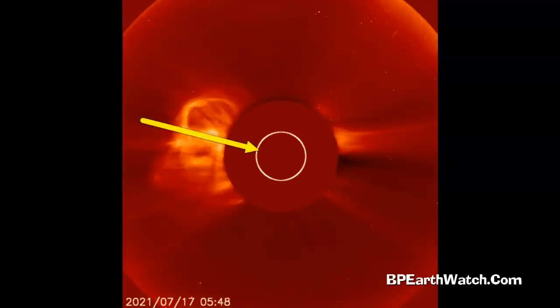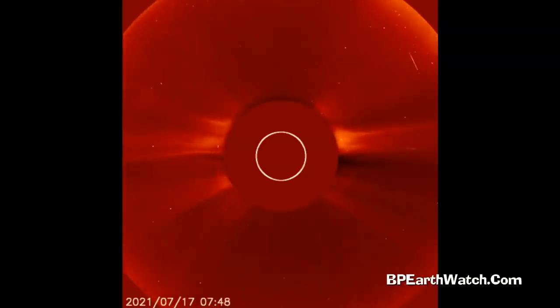Then just a few days later from another section of the sun, we saw this on the 17th, another coronal mass ejection. Again, two different areas of the sun, and now both of those are turning earth-facing.